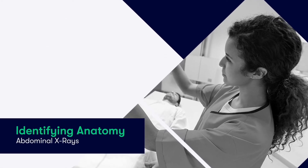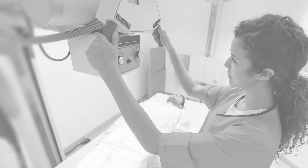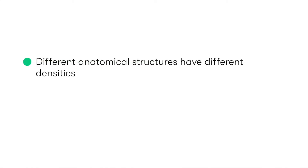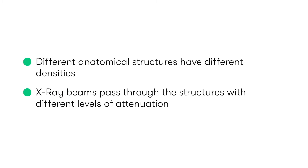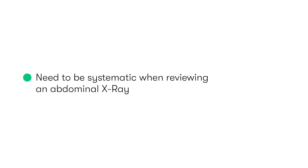Before we start looking at the various anatomical structures that we can see on the abdo x-ray, it's important to be aware that the reason we're actually able to identify any structures at all is due to their differing densities, and in turn how these result in different levels of attenuation of the x-ray beams. If you want to learn more on this subject, make sure you check out our tutorial on how x-rays work. When reviewing an abdo x-ray, the general rule of thumb is to approach it in a systematic way, which will be covered in the final two parts of this tutorial series. For now, we're going to concentrate on what anatomy we can see.